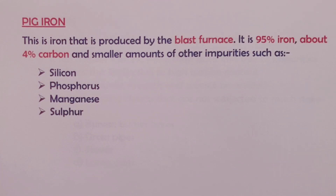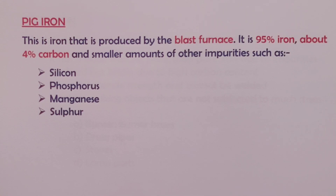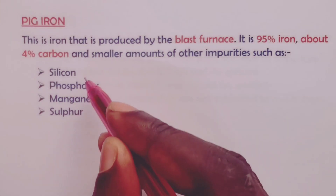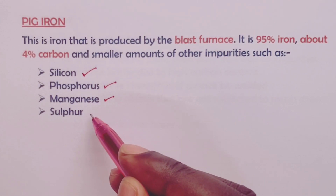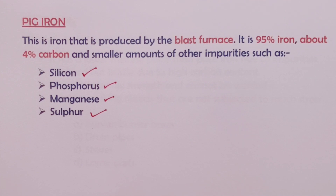We presented a video earlier on the extraction of iron metal, and we informed you that the iron obtained from the blast furnace is called pig iron. Pig iron is 95% iron. It has 4% carbon and some small amounts of other impurities, which include silicon, phosphorus, manganese, and sulfur.